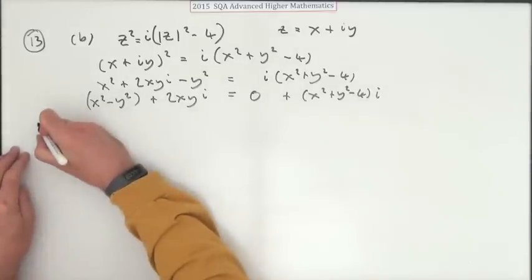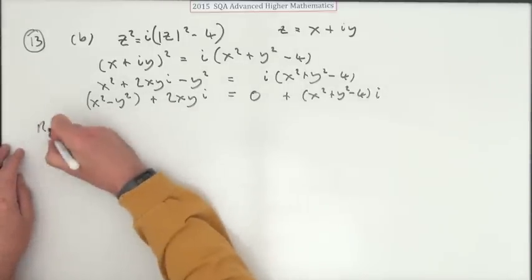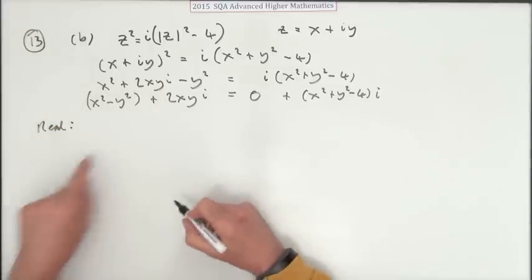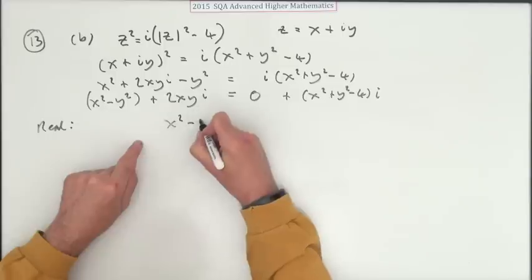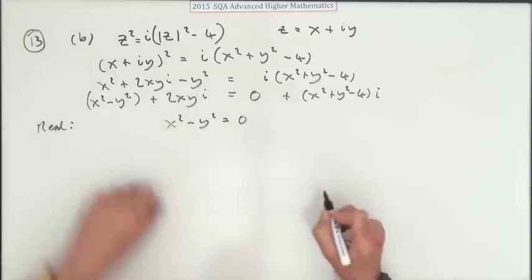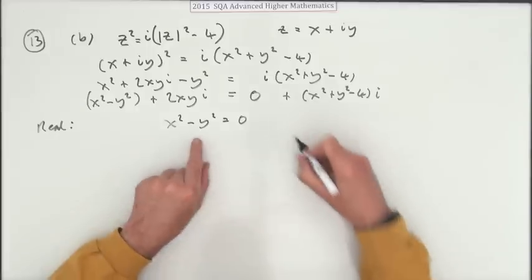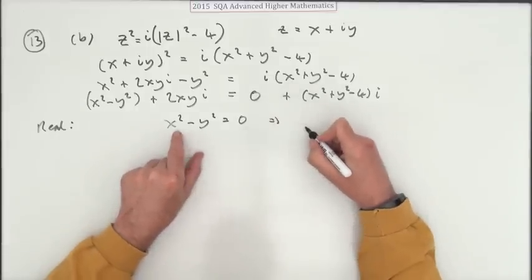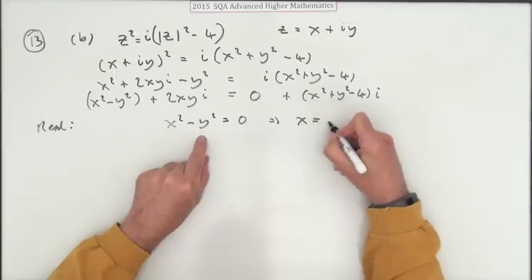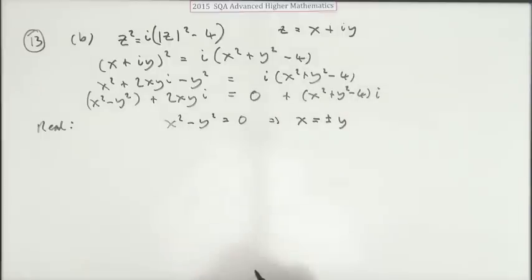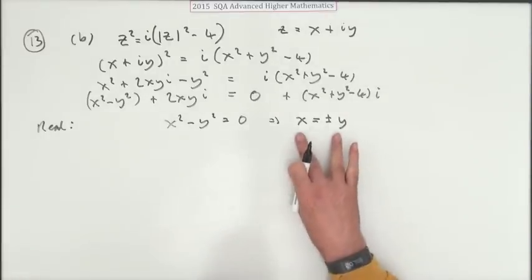Now you do the same again. You equate the parts. Which part will I equate first of all? What about the reals? So the real part says x² - y² = 0. Well, it tells you something. That tells you that x² = y², which means that x = ±y. In other words, they're the same numbers but they could have the same signs or they could have opposite signs.